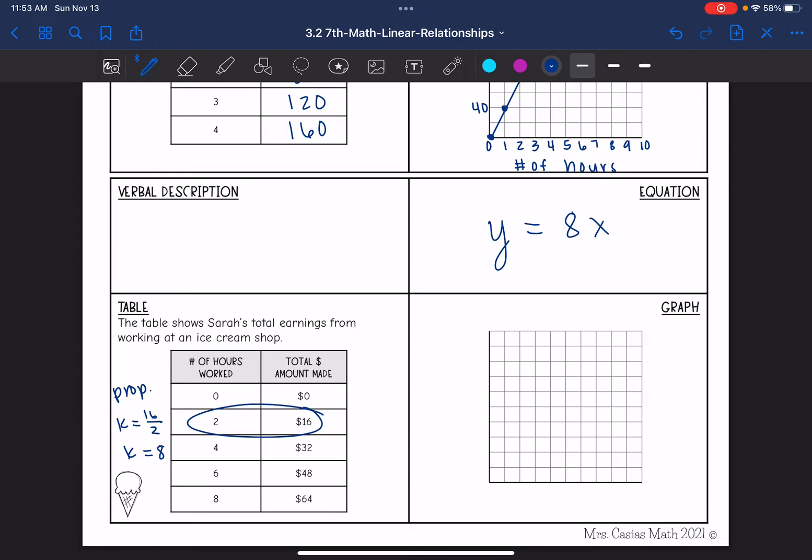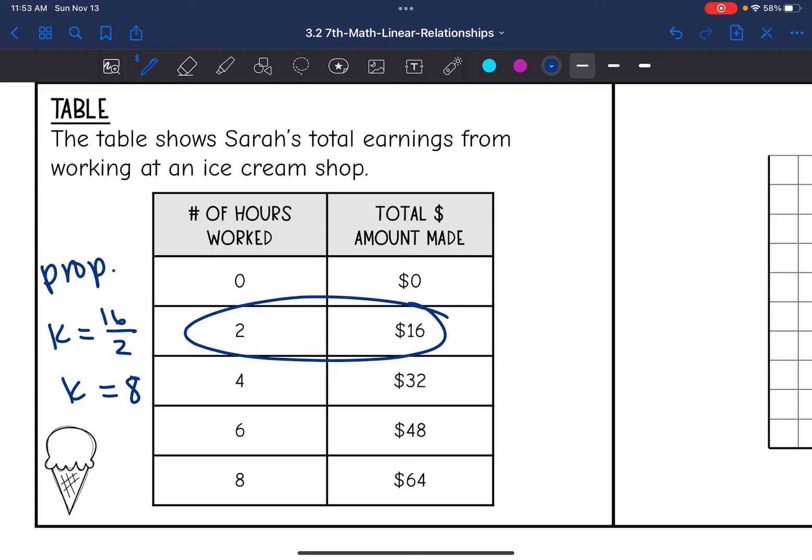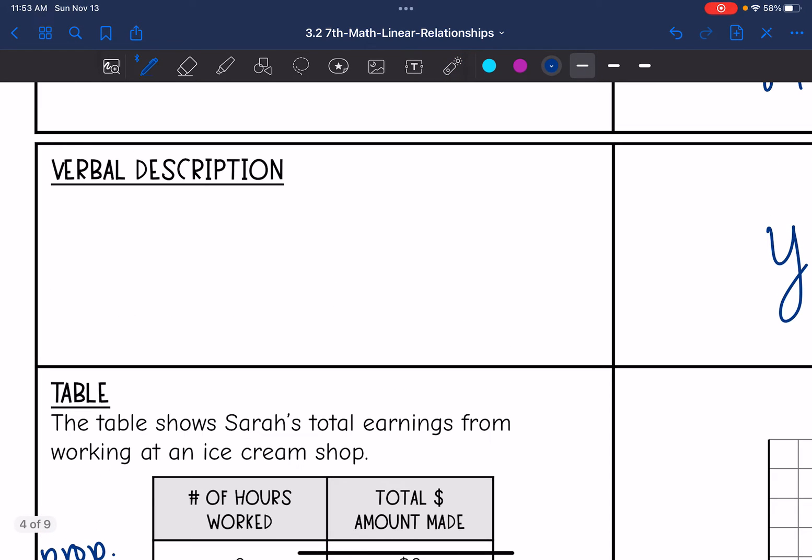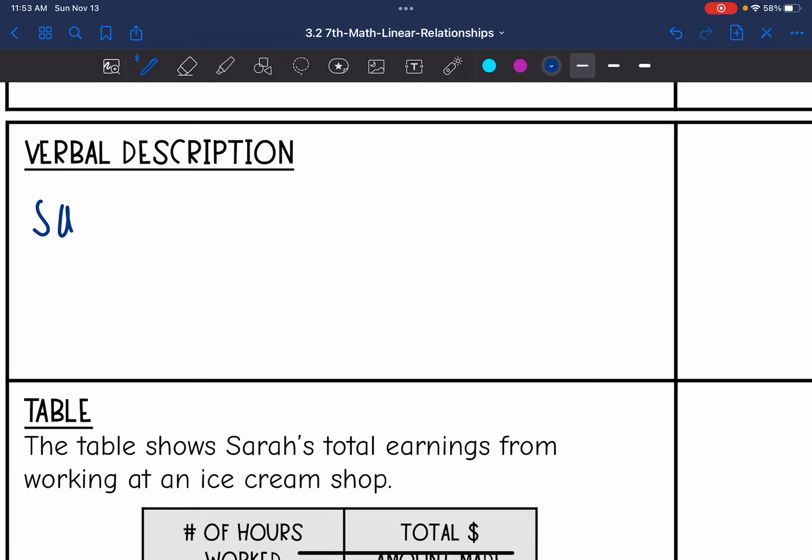And now that I know the constant of proportionality, I can fill out the verbal description as well. So we're talking about her total earnings from working at an ice cream shop. And remember, it was that multiplicative relationship. The hour she worked was 2, and then 2 times 8 was 16. The hour she worked was 4, and then 4 times 8 is 32. So that means that Sarah is making $8 an hour working at the ice cream shop. So the verbal description would be, Sarah makes $8 an hour working at an ice cream shop.